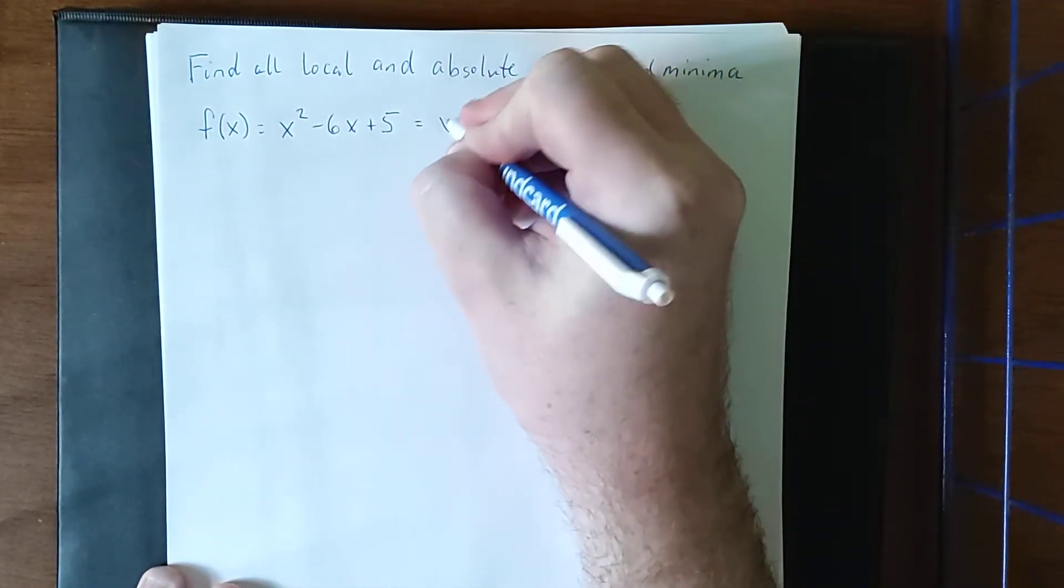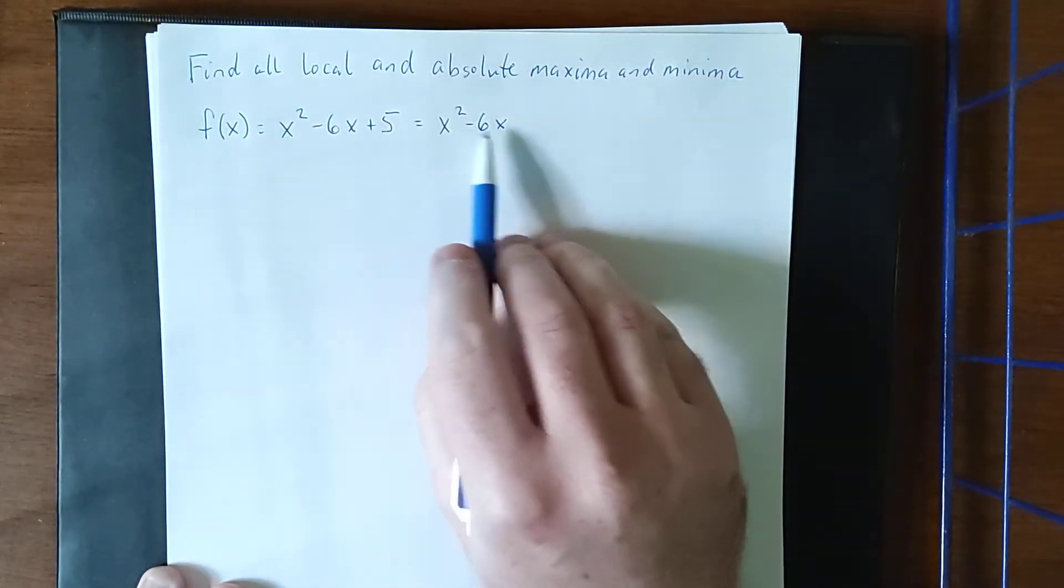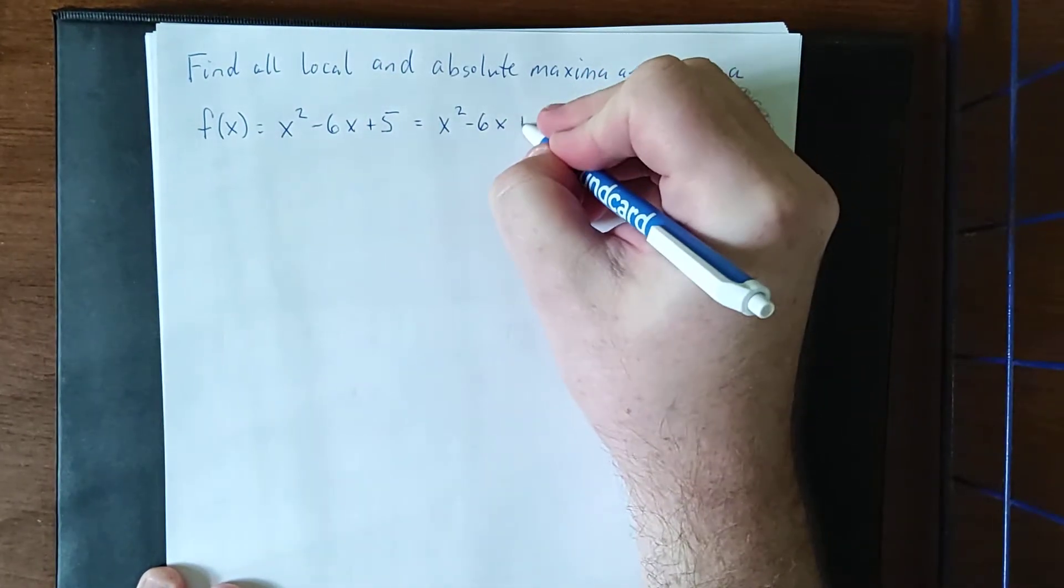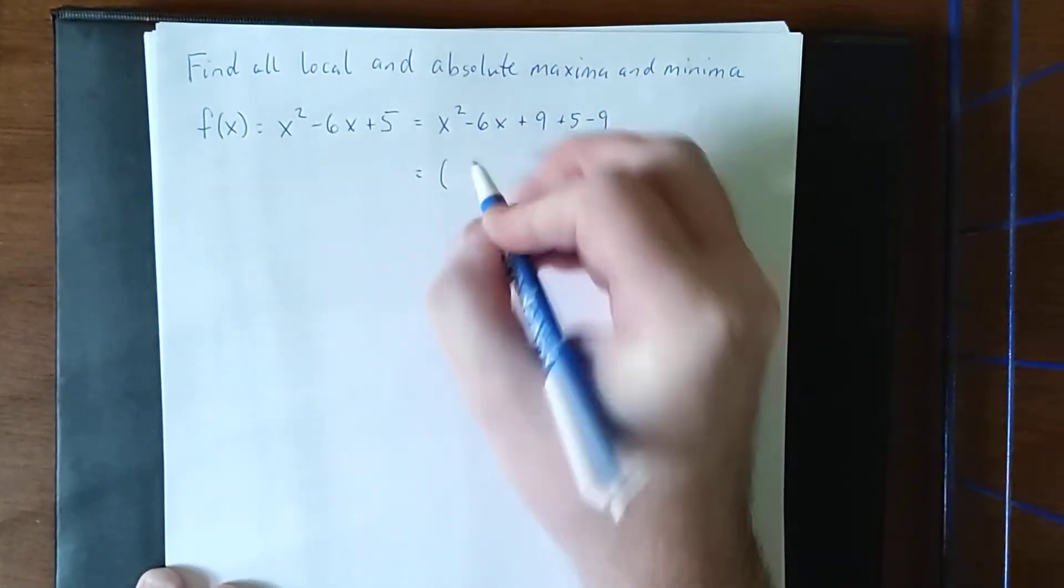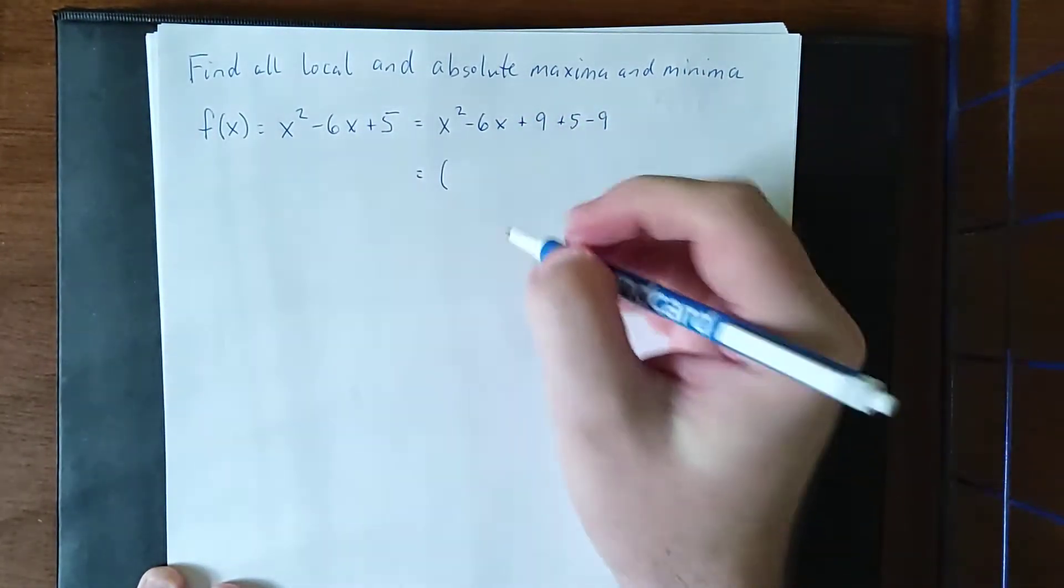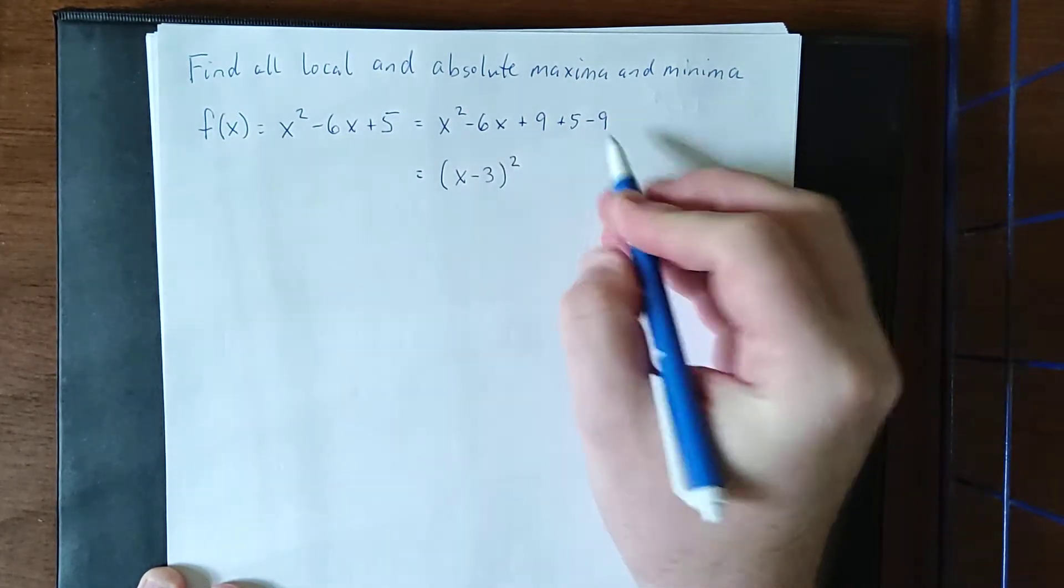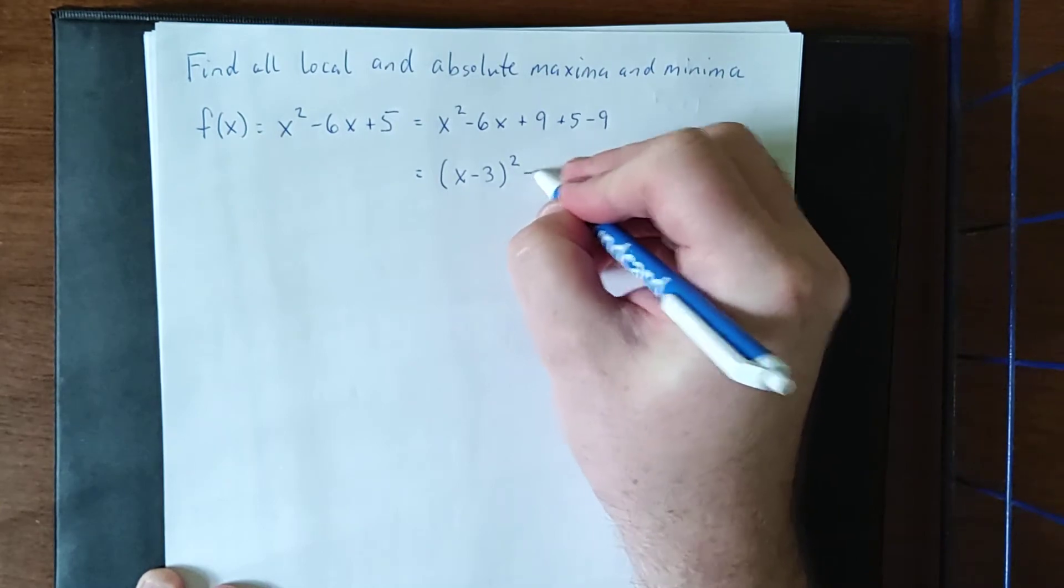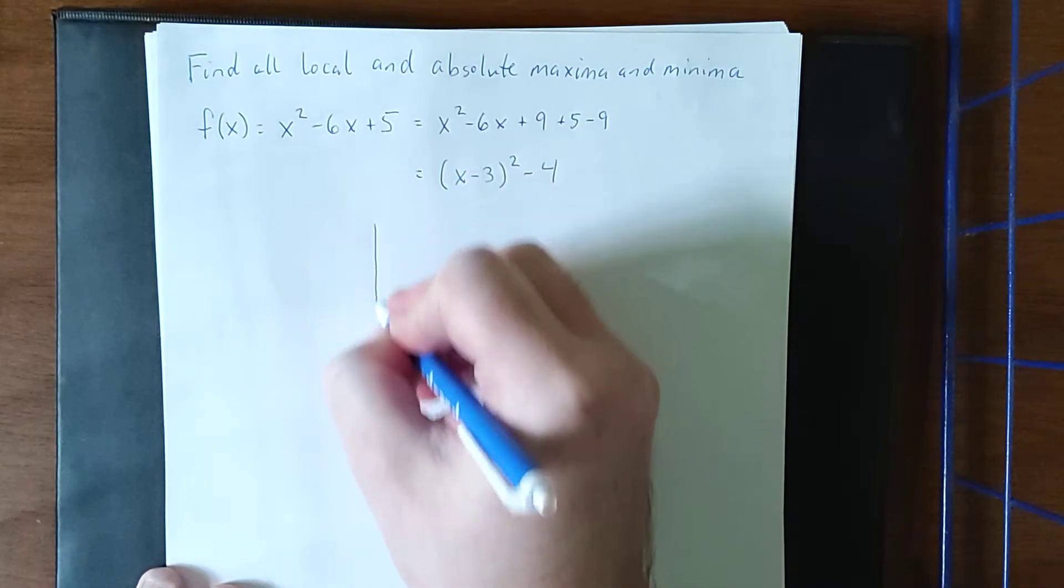I also notice that if I were to complete the square, this x² - 6x would require a +9 to complete the square, and I'll also be subtracting 9 to balance that out. The x² - 6x + 9 factors into (x - 3)² and the +5 - 9 gives us -4. This is known as vertex form for a quadratic function.